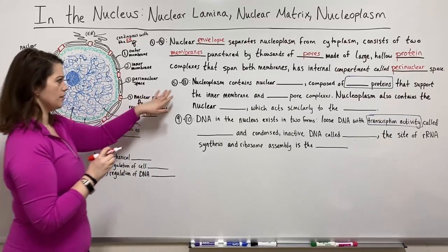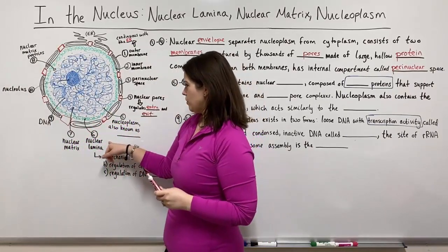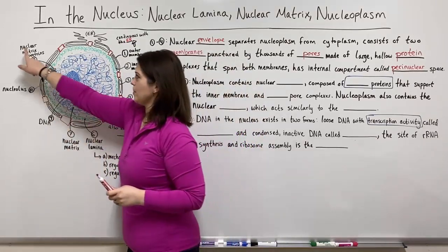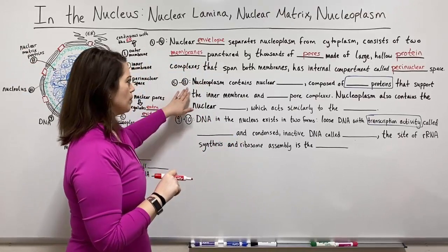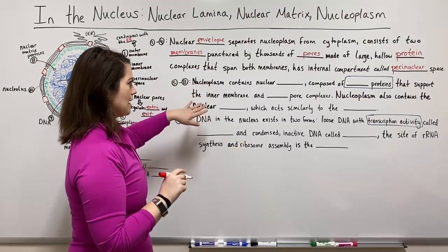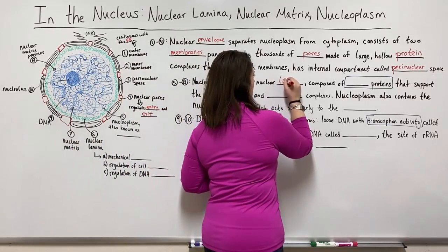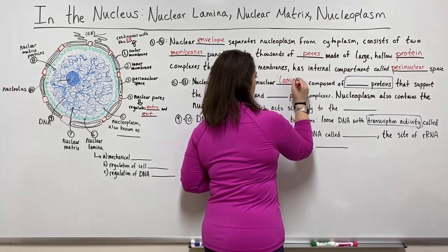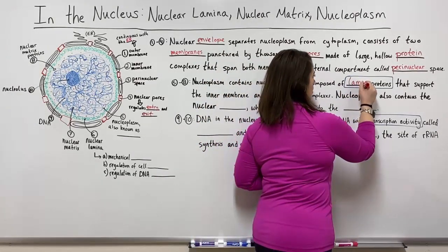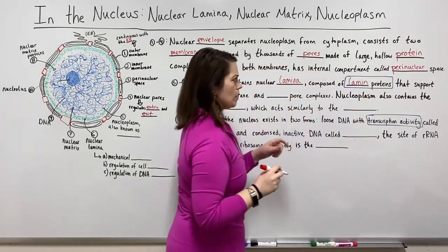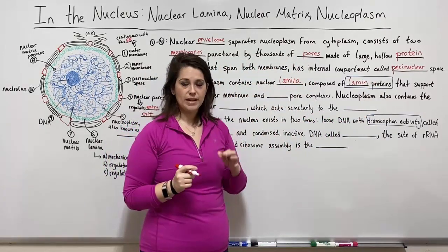Now we'll move on to items five through eight: the nucleoplasm, the nuclear lamina, the nuclear matrix, and the nuclear matrix proteins. The nucleoplasm contains the nuclear lamina, which is composed of lamin proteins. Lamin proteins are a type of intermediate filament — I have another video on the cytoskeleton covering microtubules, microfilaments, and intermediate filaments if you want to learn more.